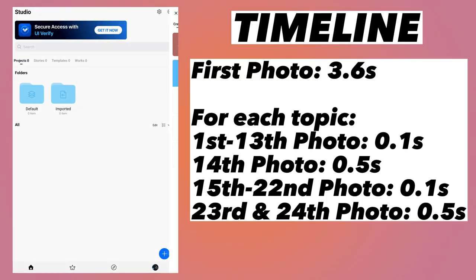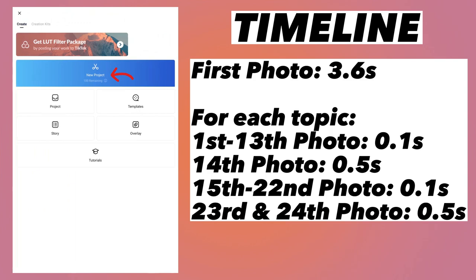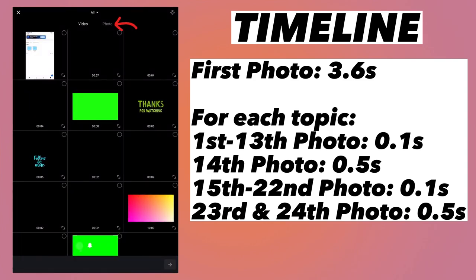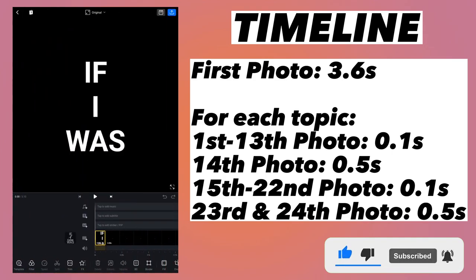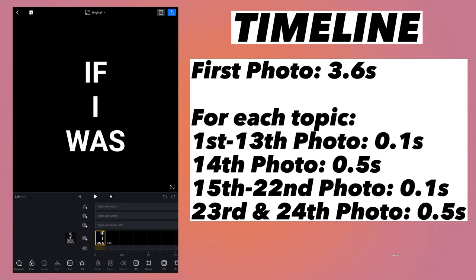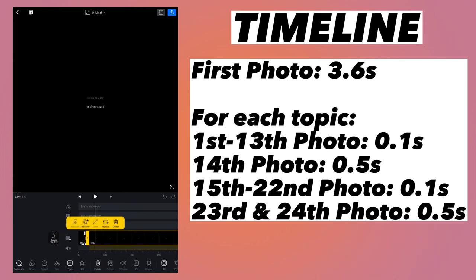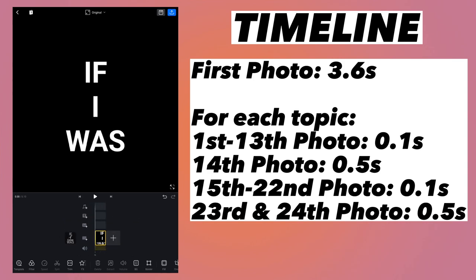To start a new project, tap on the plus button at the bottom, tap on New Project, and tap on Photos because you want to select photos. The very first photo should be the title image, so select it, click the arrow button at the bottom, and the new project will start. By default there will be an ending added to each project, so select that ending and click the delete button to delete it. As you can see, by default the duration for the photo is 0.1 second. For the first photo we want 3.6 seconds duration, so select the photo.